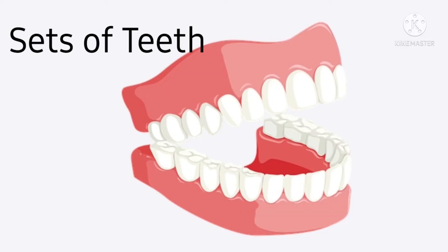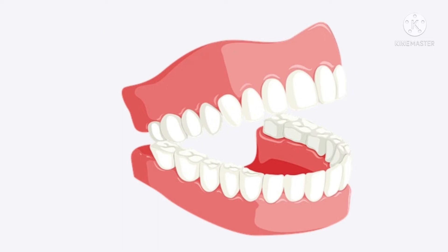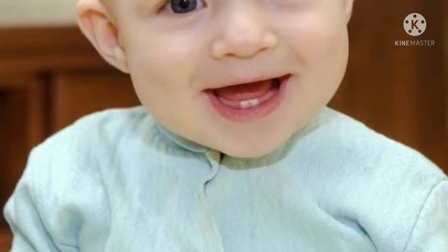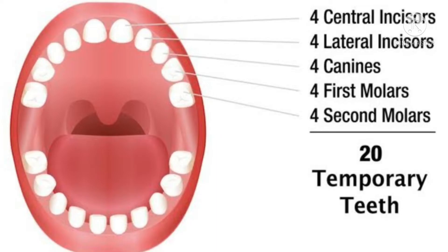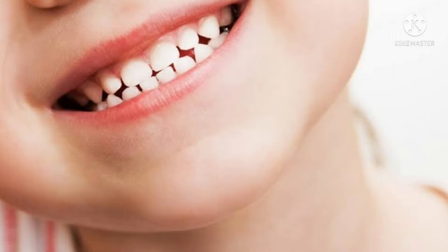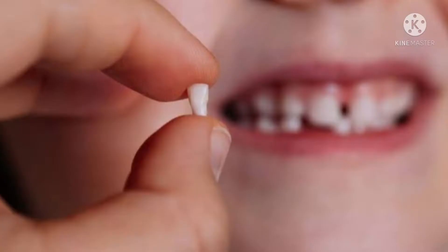Human beings have two sets of teeth: temporary and permanent. By the time a child is two and a half years old, the first set of 20 teeth appears. This set of teeth in a child is called temporary teeth, also known as milk teeth.